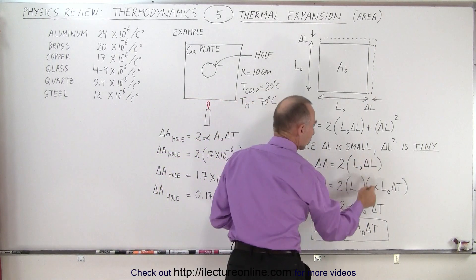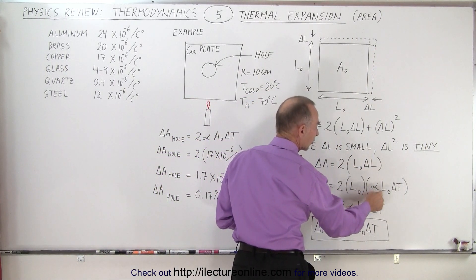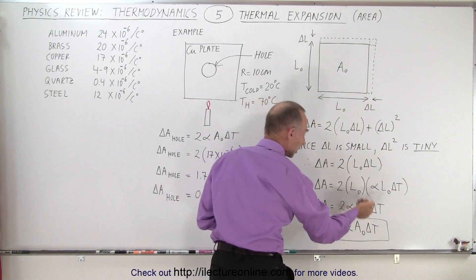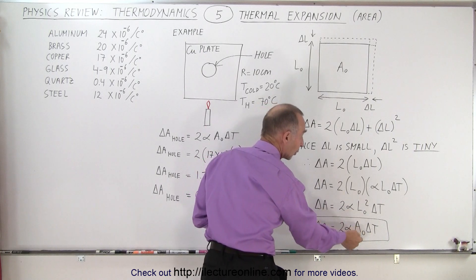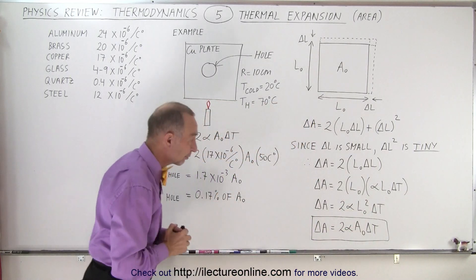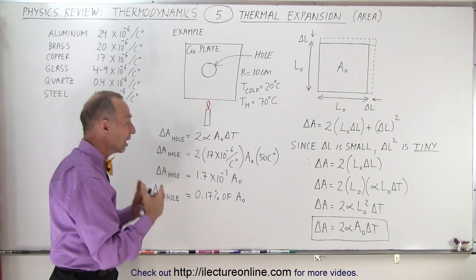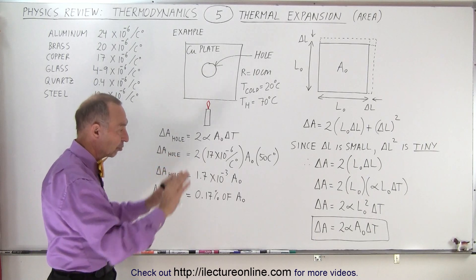The change in length is the coefficient of linear expansion times the original length times the change in temperature. The equation can be written like this. L squared, the original L squared, is the original area of the plate. That's the equation for the change in area of a surface.